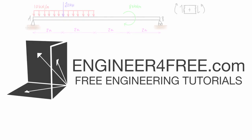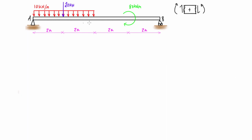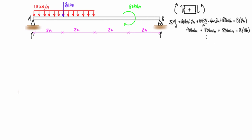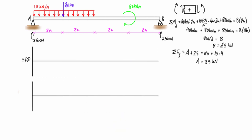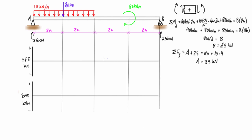Welcome back. In this video we're doing another example on shear force diagrams, bending moment diagrams, and deflected shapes. In this problem I've set it up so we're going to get two inflection points on the deflected shape. Let's go ahead and draw the free body diagram — we'll find the reaction at A is 35 kilonewtons and the reaction at B is 25 kilonewtons. This is example nine.